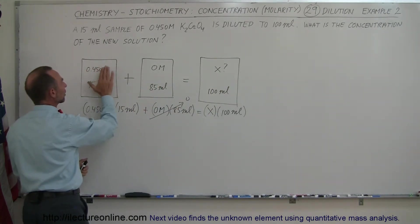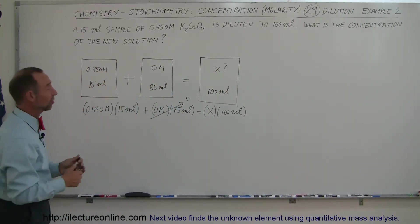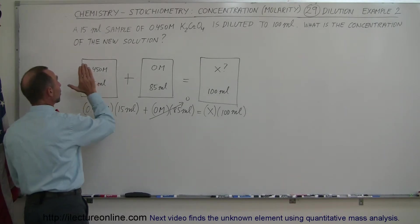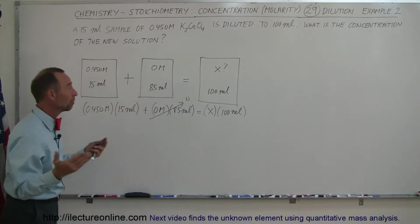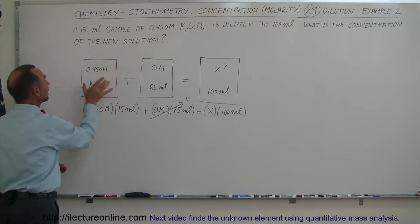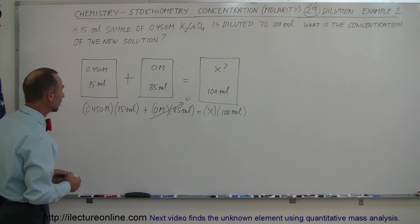Whatever we have here plus what we add has to equal the total. Since we're not adding any potassium chromate because we're just adding water, then the potassium chromate here should equal the potassium chromate there, which you can find by simply multiplying the molarity times the amount of the solution, the number of milliliters.